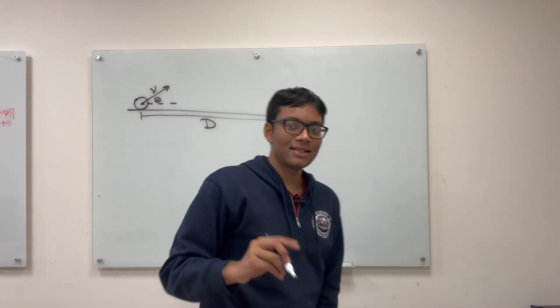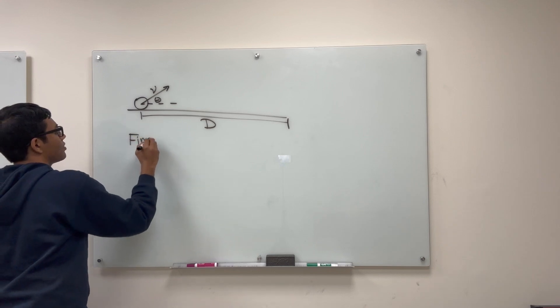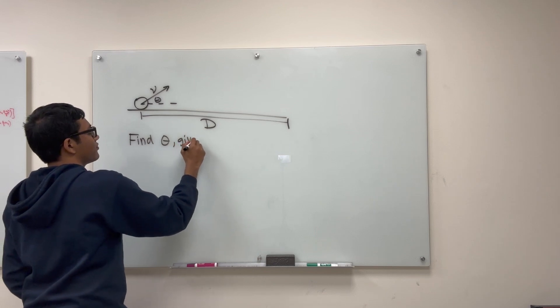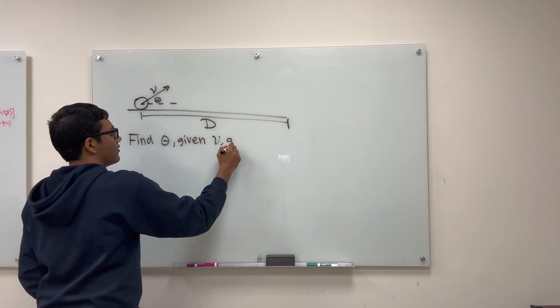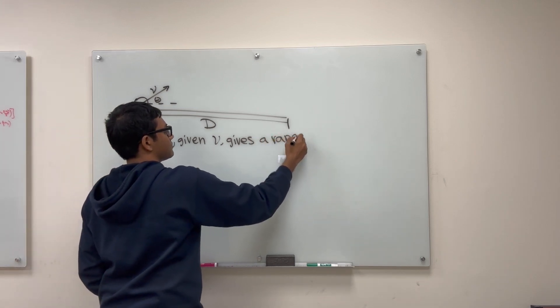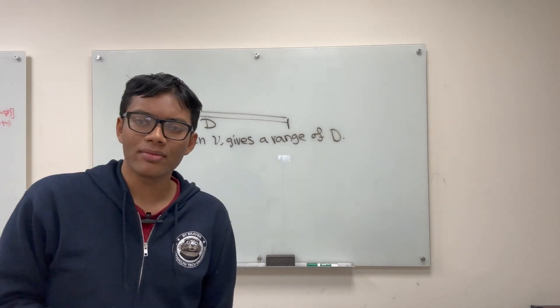The question is find what angle theta gives you a range, given an initial velocity v, gives you a range of d. So let's get started with this problem.